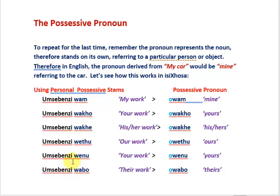Examples of using the possessive stems on the left and on the right the possessive pronoun. Take note of the vowel highlighted in lighter blue. 'Umsebenzi wam' — my work, or 'wam' — mine. 'Wako' — your work, or 'wako' — yours. 'Wake' — his or her work, or 'wake' — his or hers. 'Wethu' — our work, or 'wethu' — ours.